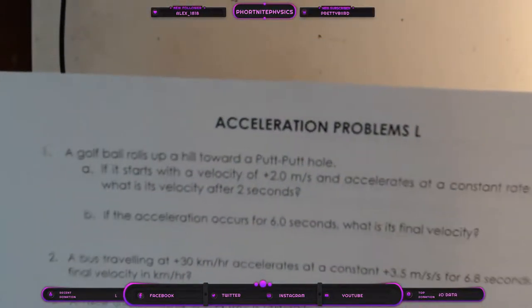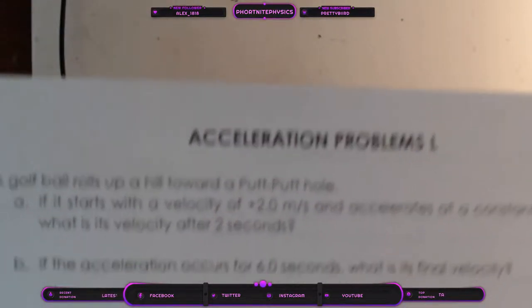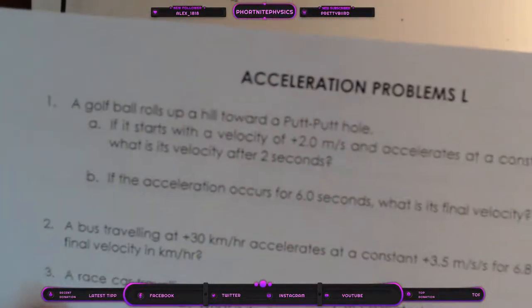So very first thing - checking the screen visibility. A golf ball rolls up a putt-putt hole. Still wrong. That's right now. I can see it.